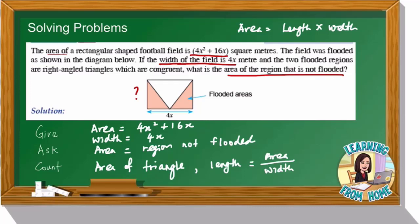From here, we notice that the information given from the question is the area of the rectangle, which is 4x² plus 16x. The other information given is the width of the field, which is 4x.